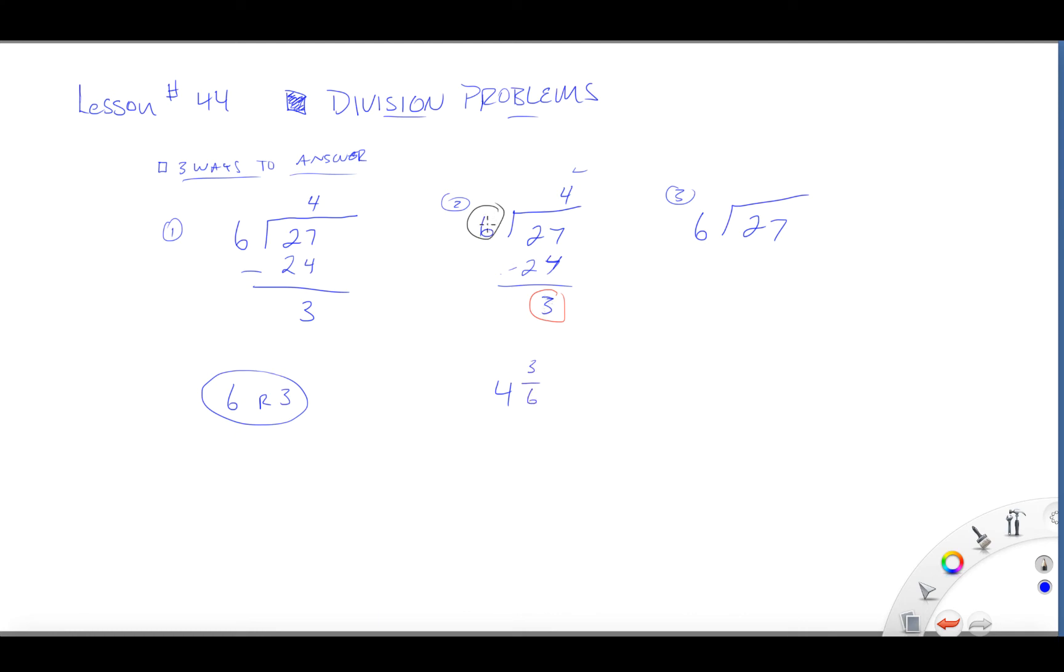In other words, what we divided by. So three over six, which is equal to four and one half. We answered it in a fractional way.